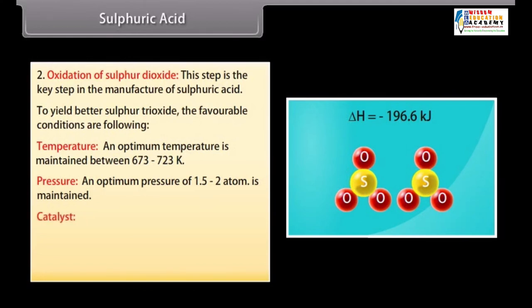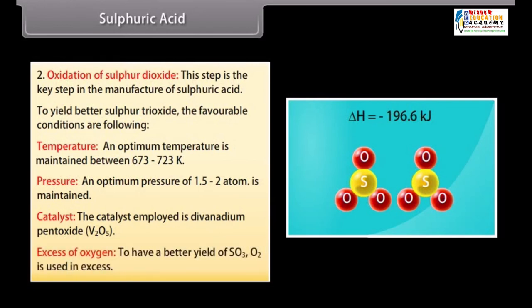Catalyst. At such a low temperature, the reaction is slow. The catalyst employed is Divanadium pentoxide V2O5. Excess of Oxygen. To have a better yield of SO3, O2 is used in excess.